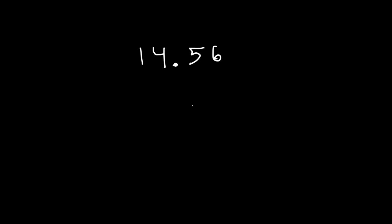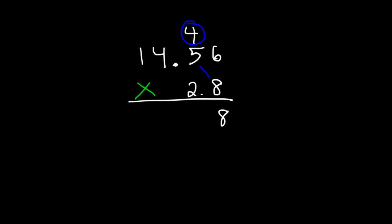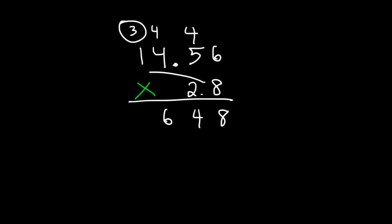Let's continue working on some more examples. Let's multiply 14.56 by 2.8. So let's start with 8 times 6. 8 times 6 is 48 — carry over the 4. Next, we have 8 times 5, which is 40 plus 4, so that's 44 — carry over the next 4. And then 8 times 4 is 32 plus 4, that's 36. So let's write 6 and carry over the 3. 8 times 1 is 8 plus 3, that's 11.